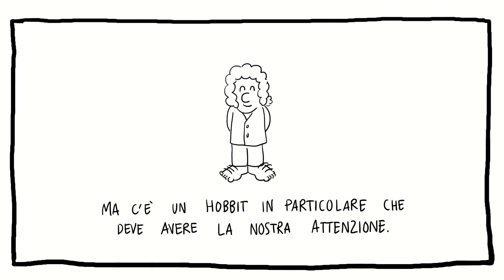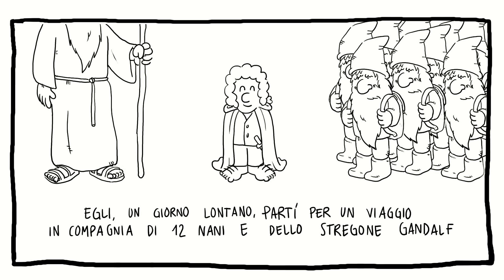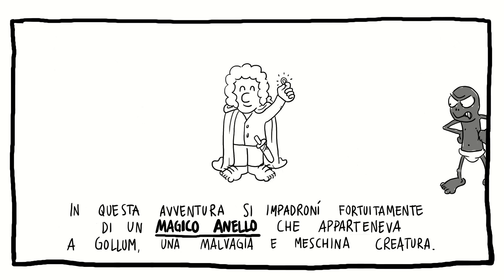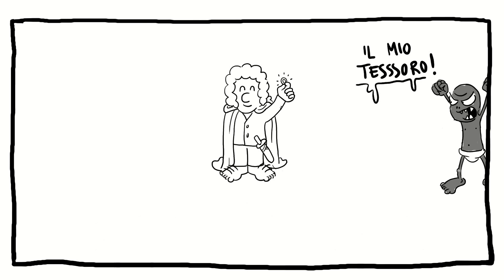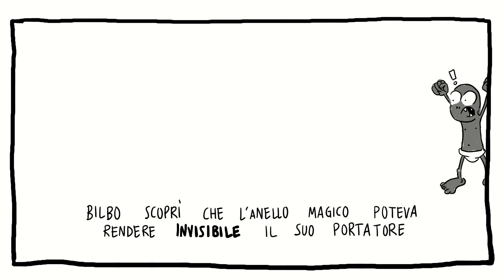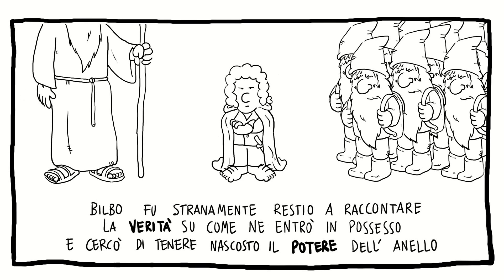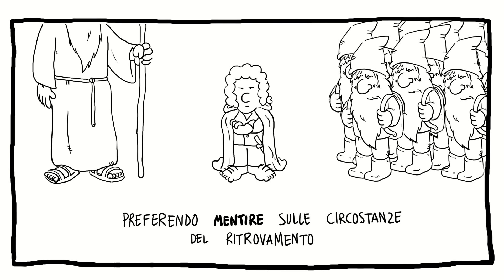Ma c'è un Hobbit in particolare che deve avere la nostra attenzione: il suo nome è Bilbo. Egli un giorno lontano partì per un viaggio in compagnia di dodici nani e dello stregone Gandalf. In questa avventura si impadronì fortuitamente di un magico anello che apparteneva a Gollum, una malvagia e meschina creatura. Bilbo scoprì che l'anello magico poteva rendere invisibile il suo portatore. Riuscì così a sfuggire a Gollum e a tenere l'anello per sé. Bilbo fu stranamente restio a raccontare la verità su come ne entrò in possesso, preferendo mentire sulle circostanze del ritrovamento.